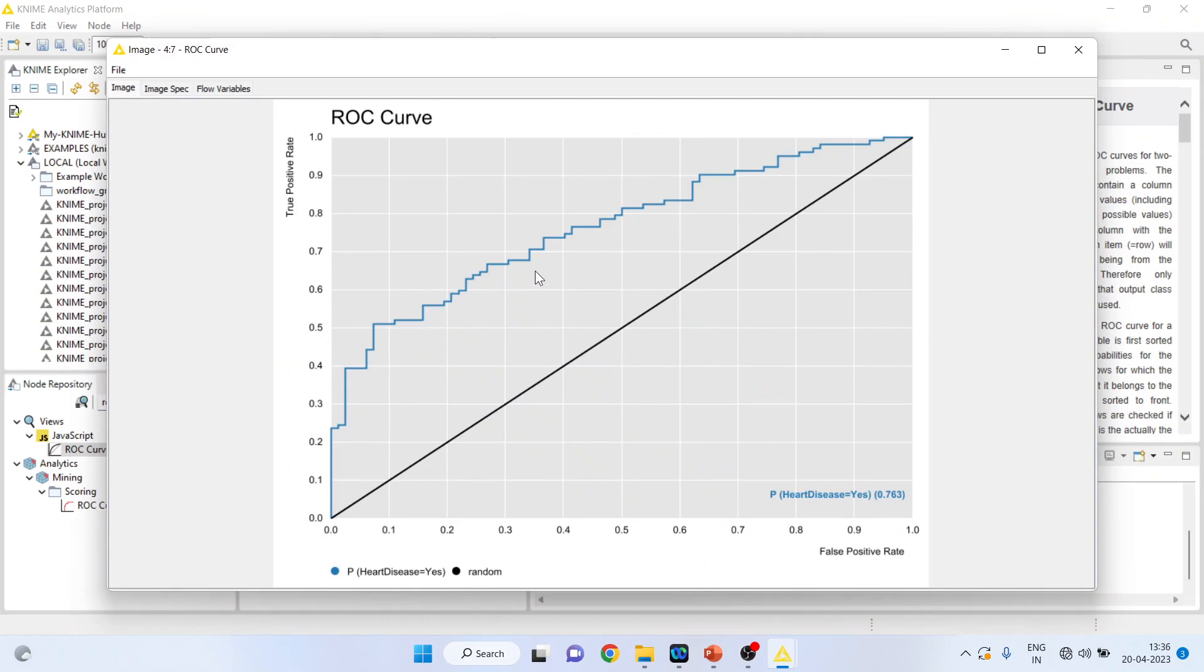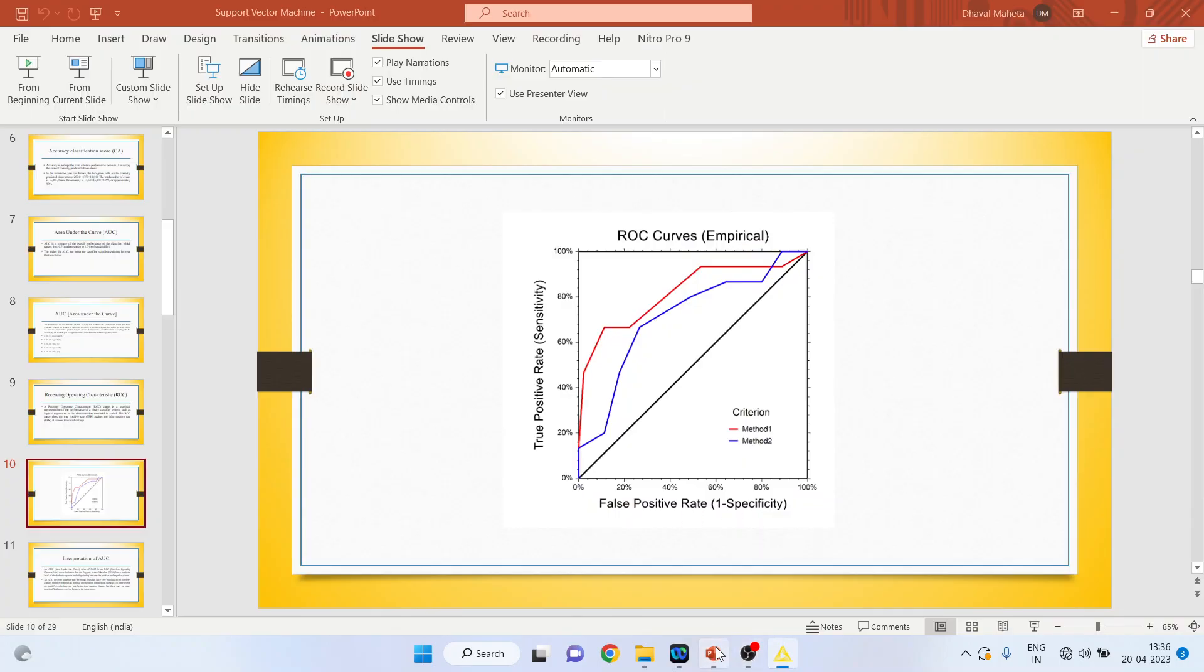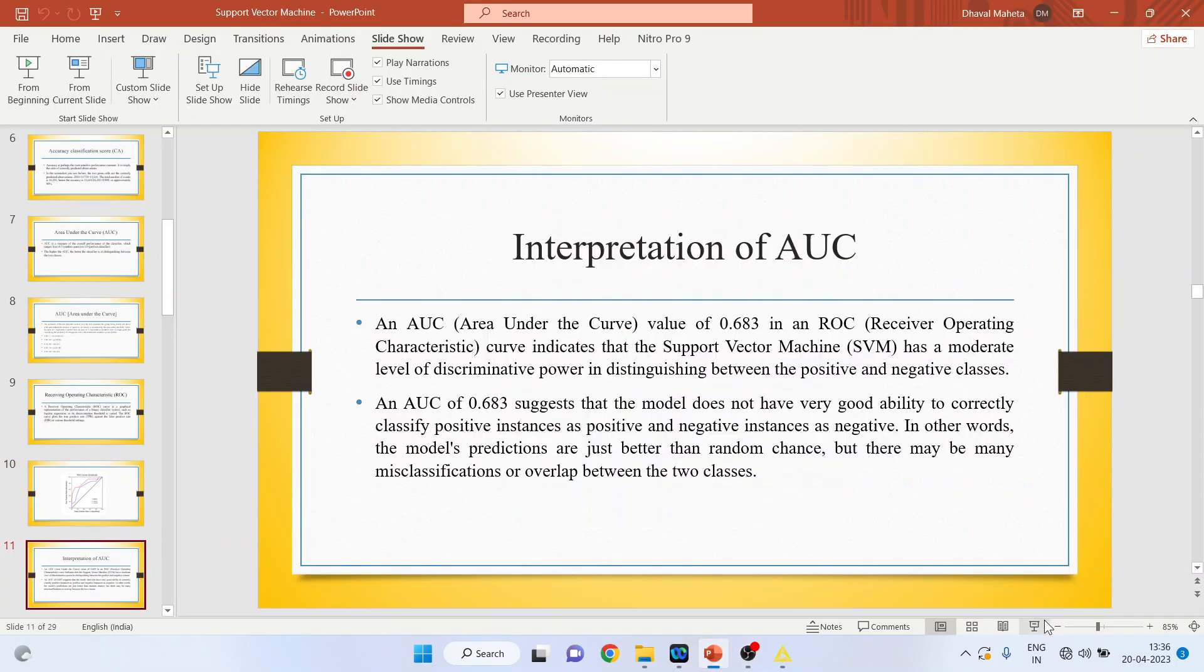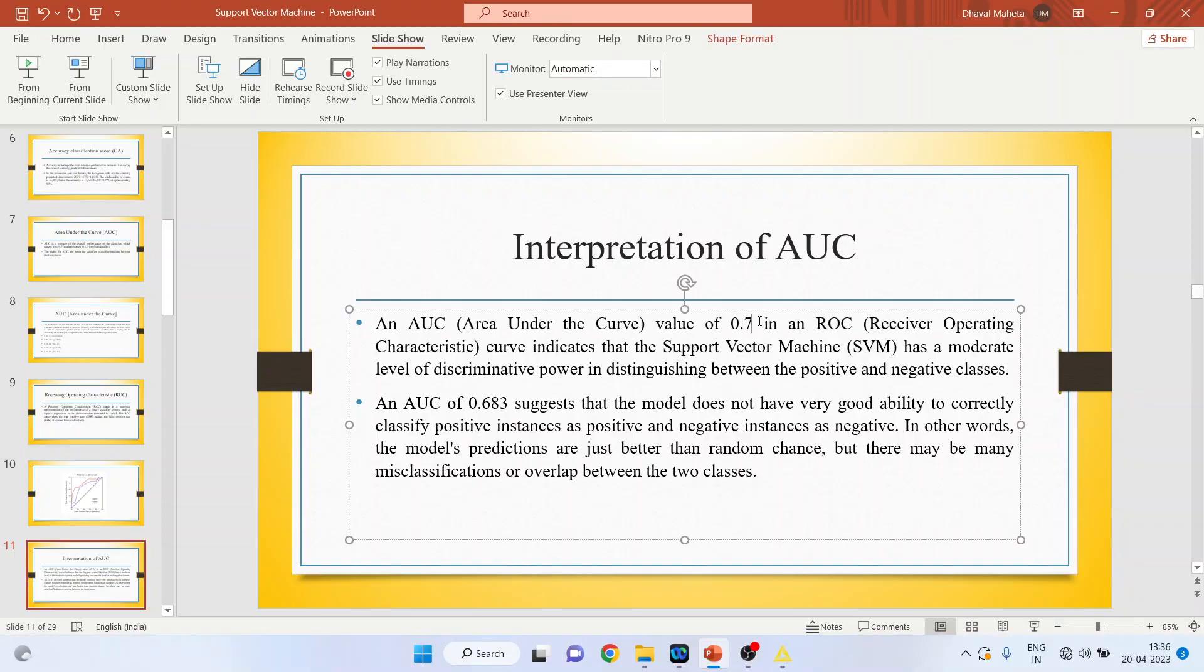Right-click on it and see the image. So you can see this image and what is the area under this curve? It's 0.763. So let's do the interpretation of this. Interpretation of AUC, 0.763. We will have to change here. So 0.763.